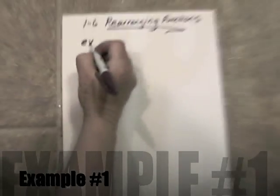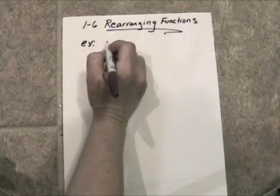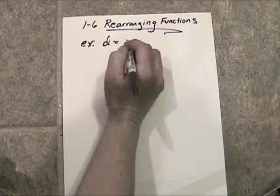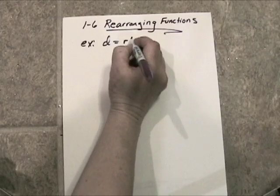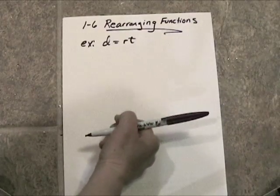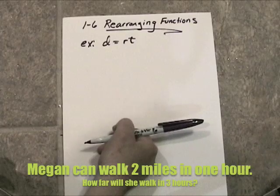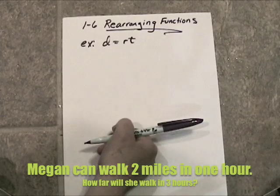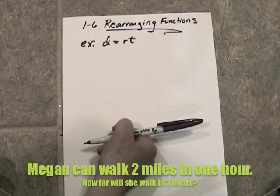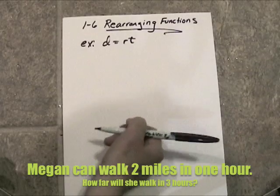Let's go with the classic distance equals rate times time. And let's say that Megan can walk 2 miles in an hour. How far will she walk in 3 hours?